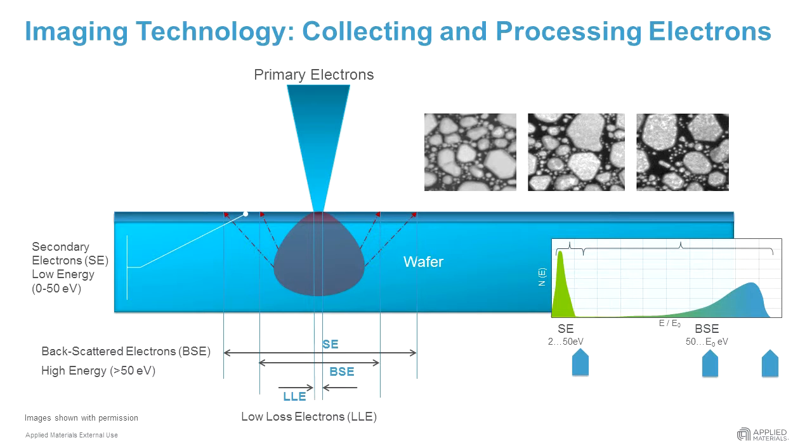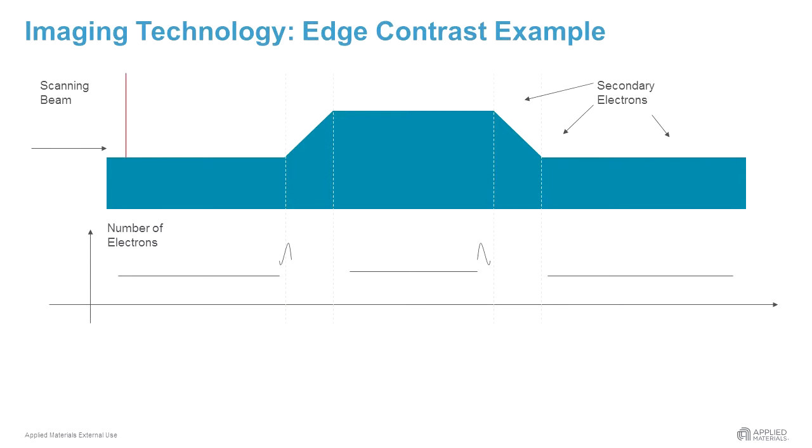Secondary electrons are very sensitive to the surface geometry. When the e-beam hits a tilted surface, more secondary electrons can leave the substrate.